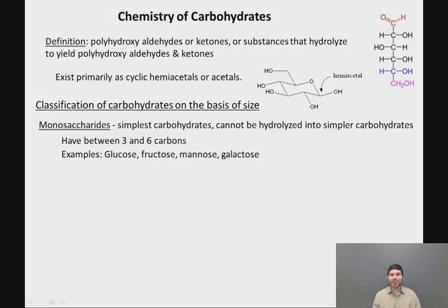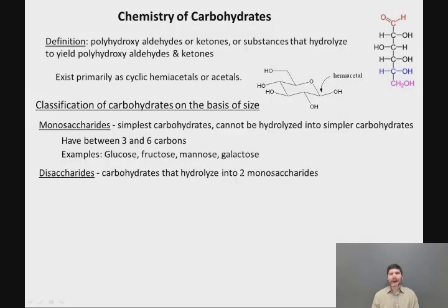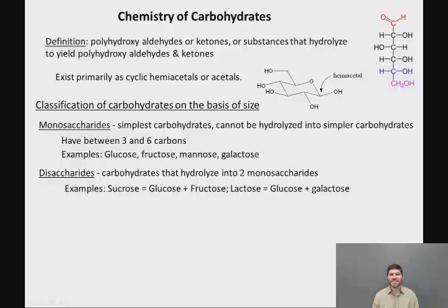Important examples of monosaccharides that you've probably heard of are glucose, fructose, mannose, and galactose. All of these sugars have names ending in "-ose." Disaccharides are carbohydrates that hydrolyze into two monosaccharides. For example, sucrose is made up of glucose plus fructose, and lactose is made up of glucose plus galactose.